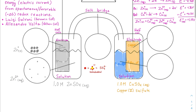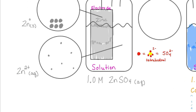Because the solution is 1 molar and every zinc ion is paired with one sulfate, I'll draw six zinc ions and six sulfate ions in the solution, along with six zinc atoms in the solid electrode — all three groups of six to keep the particulate representation consistent.